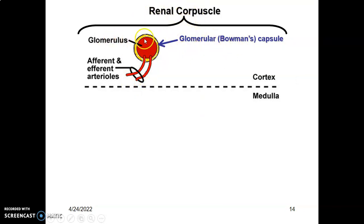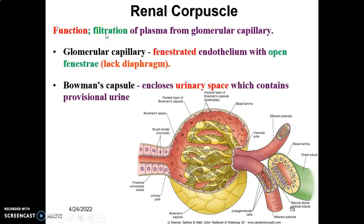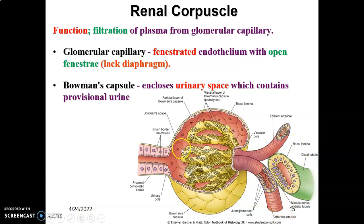The renal corpuscle is Bowman's capsule with the fenestrated capillaries within it. Its function is filtration of plasma from the glomerular capillaries. The glomerular capillaries have fenestrated endothelium with open fenestrae that lack a diaphragm. Bowman's capsule encloses the urinary space, which contains the provisional urine — the filtrate. As blood enters through the afferent arteriole it is filtered, provisional urine is held in the Bowman's space before moving to the proximal convoluted tubule, and the remaining filtered blood exits through the efferent arteriole.